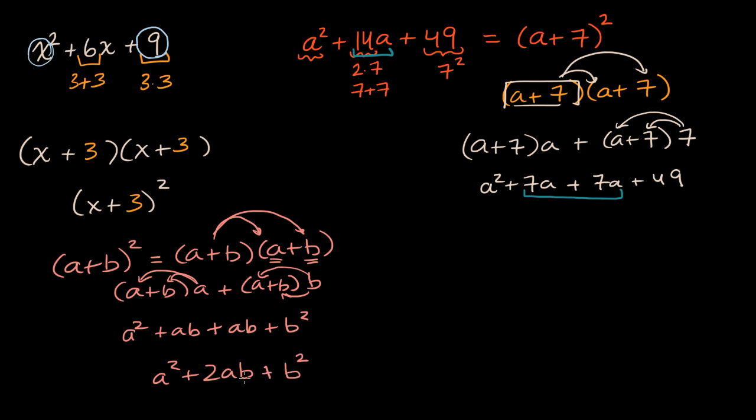So this is going to be the general form. If a is the variable, which was x or a in this case, then it's just going to be whatever squared in the constant term is going to be two times that times the variable.